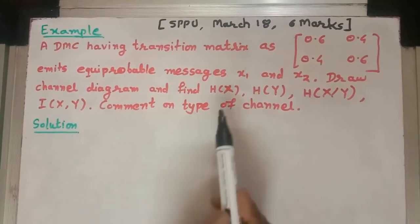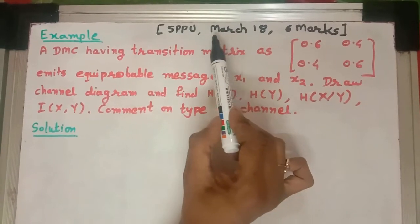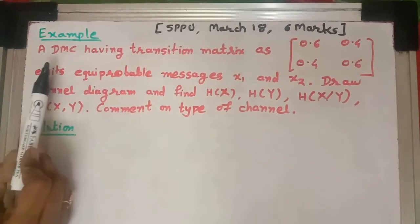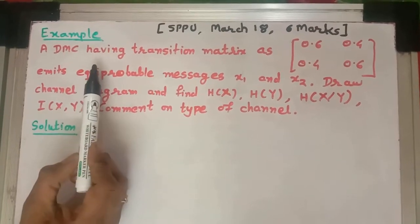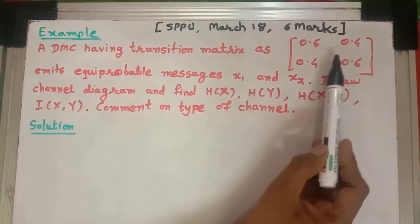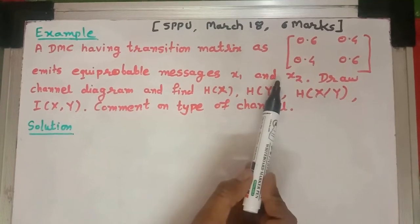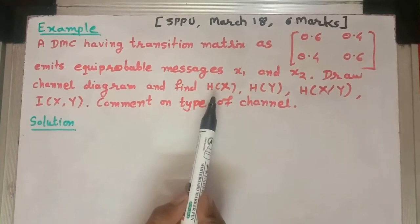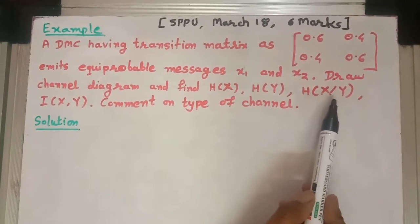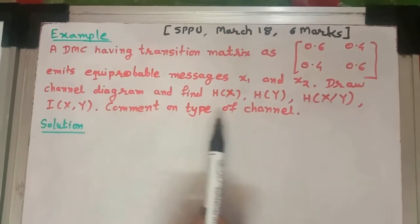This example is from the Pune University (SPPU) question paper of March 2018 for 6 marks. A discrete memoryless channel (DMC) has the transition matrix as [0.6, 0.4; 0.4, 0.6] with equiprobable messages x1 and x2. We need to draw the channel diagram and find H(X), H(Y), H(X|Y), and mutual information I(X,Y), and comment on the type of channel.